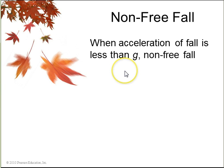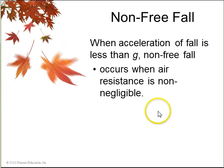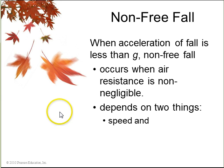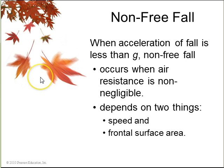When the acceleration of the fall is less than G, we call this non-free fall, it occurs when air resistance is non-negligible. For example, these leaves, as they fall from the tree, certainly air resistance is not negligible for them. The air resistance depends on two things. How fast the object is traveling through the air, and how much frontal surface area it has.